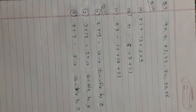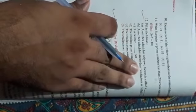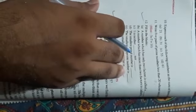Now question number twelve — fill in the blanks। Part (a): a number which has only two factors is called — ऐसा number जिसके सिर्फ दो ही factors हों उसे prime number कहते हैं। वो दो factors होंगे: one और itself।